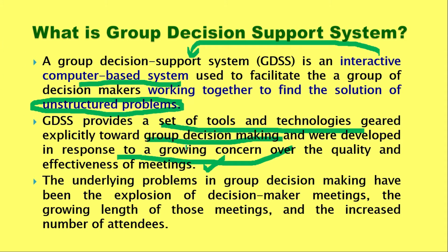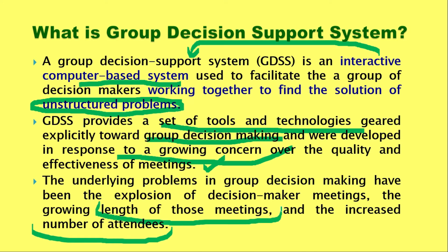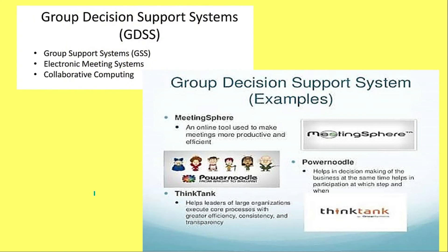GDSS helps in group decision making at a higher level, majorly for unstructured problems. The number of meetings, number of attendees, and the length of meetings were all increasing day by day within organizations due to an explosion of decision-maker meetings. Because of all these underlying problems, group decision support systems came into the picture and today they are proving very beneficial for all organizations.